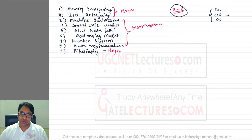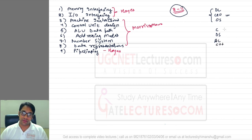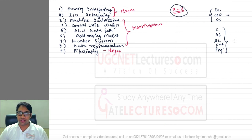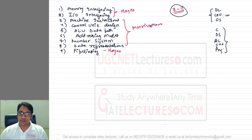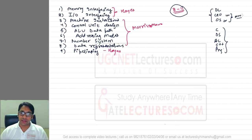Similarly, C programming, data structures, algorithms, and programming methodology are one single package for students preparing for UGC NET. There are subjects which are always studied as a package. For this subject, there are topics overlapping with operating system and computer architecture, like memory management and I/O management, which is why we study them together.